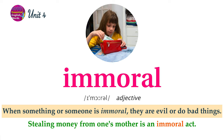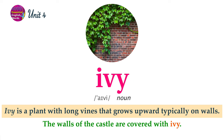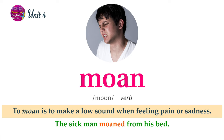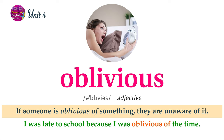When something or someone is immoral, they are evil or do bad things. Stealing money from one's mother is an immoral act. Ivy is a plant with long vines that grows upward, typically on walls. The walls of the castle are covered with ivy. To moan is to make a low sound when feeling pain or sadness. The sick man moaned from his bed. If someone is oblivious of something, they are unaware of it. I was late to school because I was oblivious of the time.